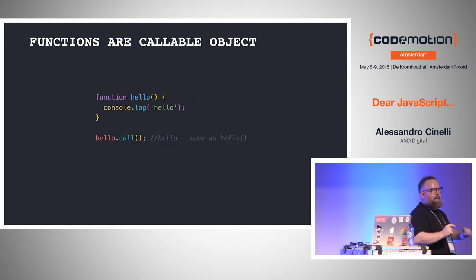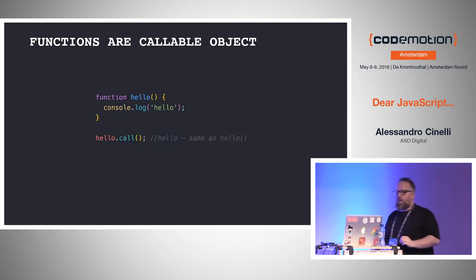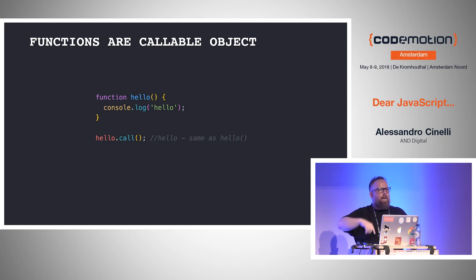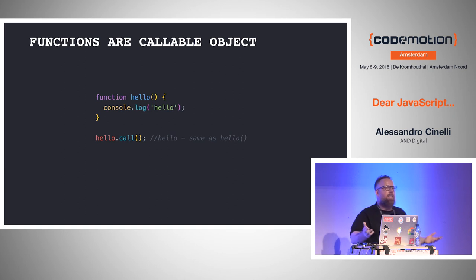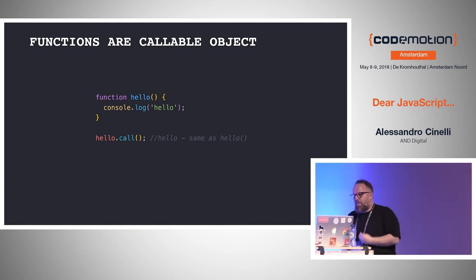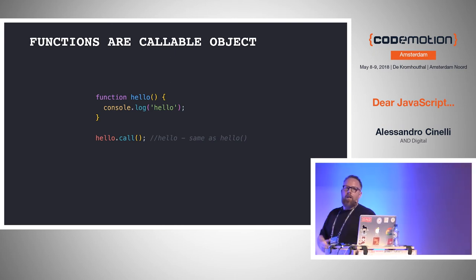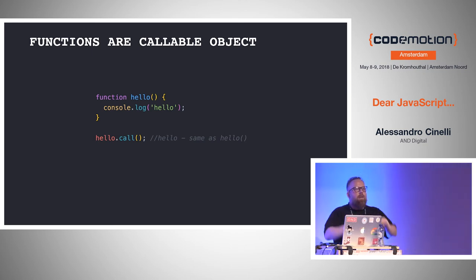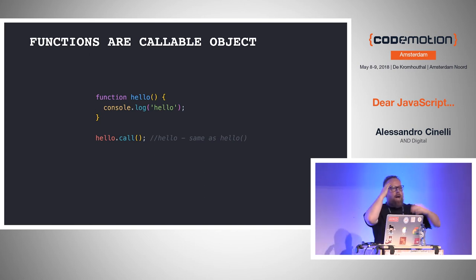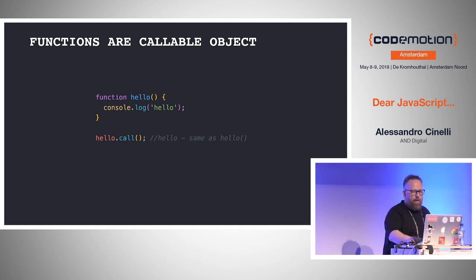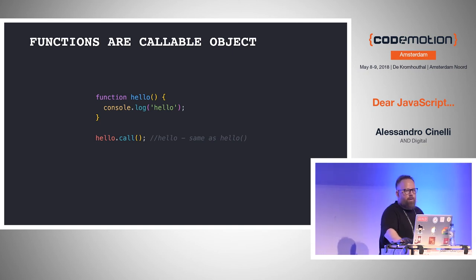Another thing that clicked for me: functions are callable objects. If you have this function and instead of calling hello() with parentheses, you call hello.call(), you get the same result. These are the small bits that help you at the beginning when trying to understand how JavaScript works — small things that can be easily connected to each other and will help beginners move forward without always being stuck with a framework or library.